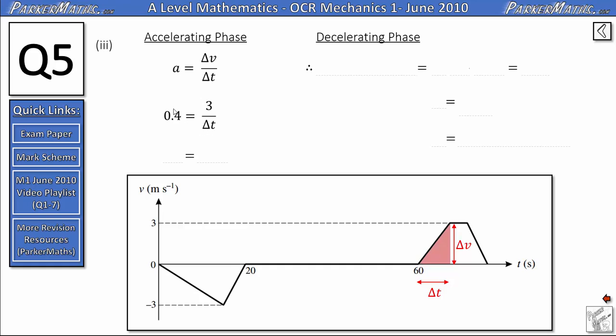So to rearrange this, we'd multiply up by the delta t and divide through by the 0.4. So we get delta t is 3 divided by 0.4. That's the same as 30 divided by 4. Half it and half it again, we get 7.5 seconds. So what we've worked out here is the amount of time to get from 60 seconds here to this time here where the velocity is at 3 metres per second.